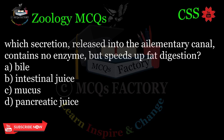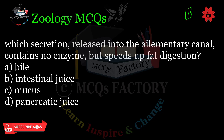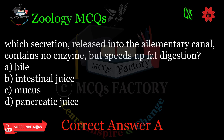Which secretion, released into the alimentary canal, contains no enzyme but speeds up fat digestion? A. Bile. B. Intestinal juice. C. Mucus. D. Pancreatic juice. Correct answer: A.